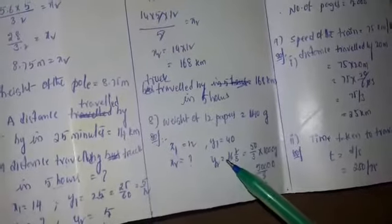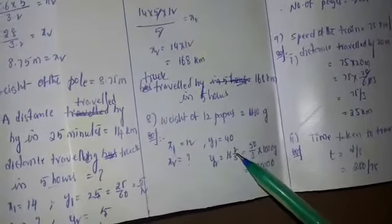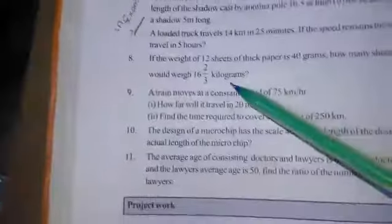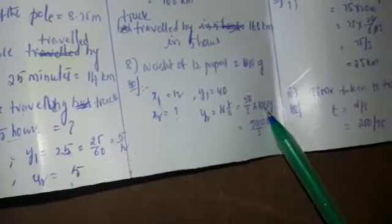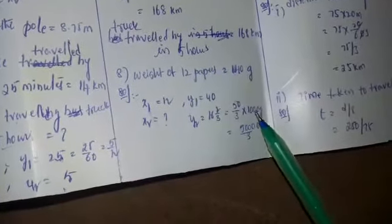They gave kilograms, so we convert grams to kilograms - 1000 grams. So 50 times 1000 is 50,000 over 3.